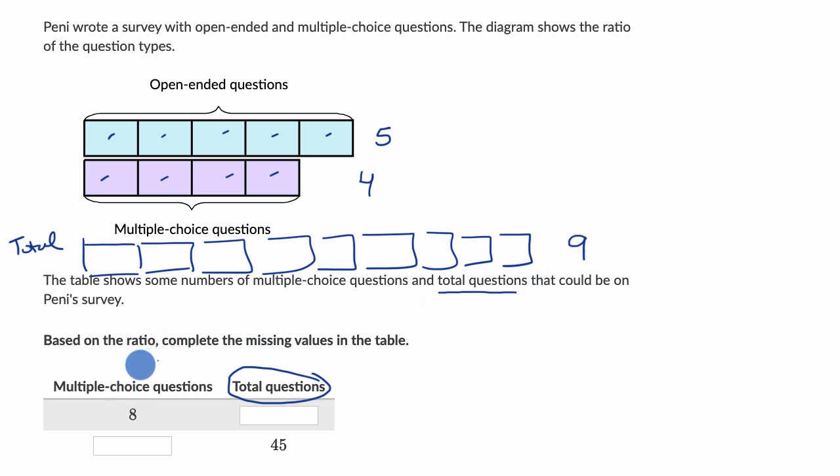So we could say that the ratio of multiple choice to total questions is going to be four to nine. For every four multiple choice questions, you're going to have nine total questions.